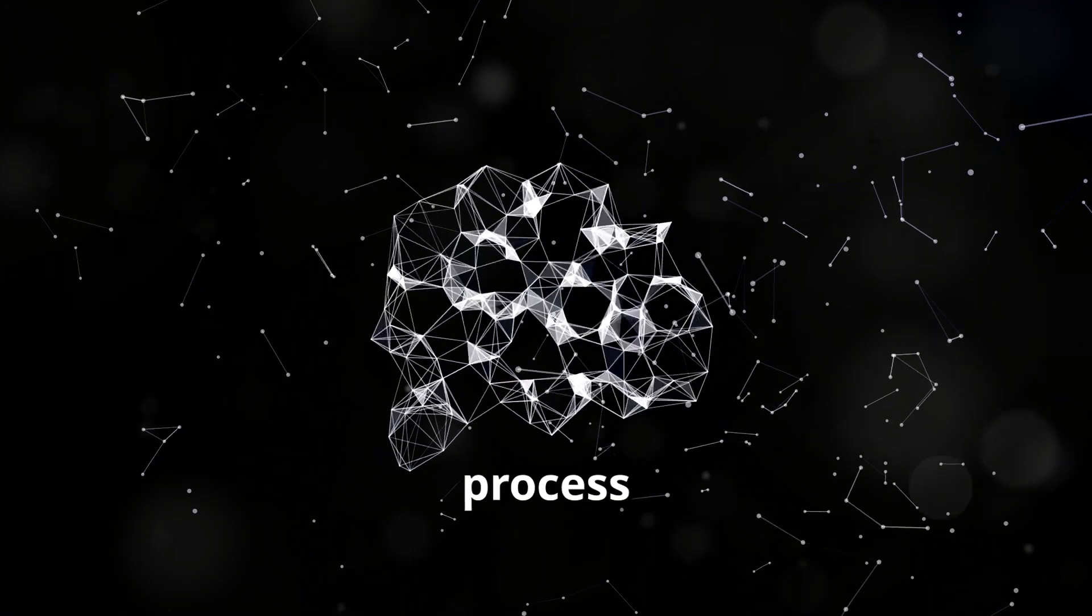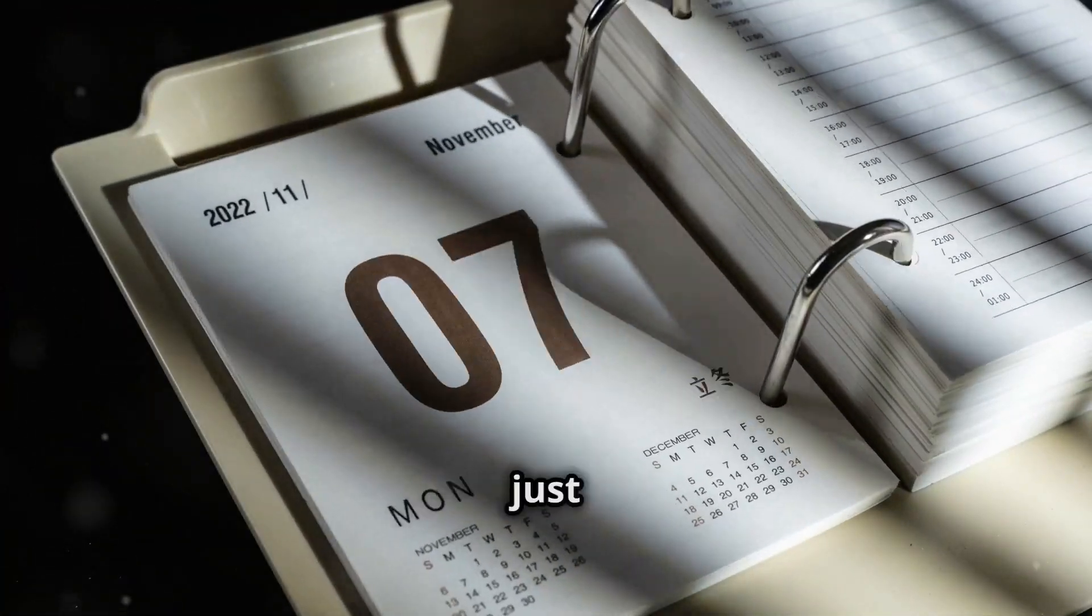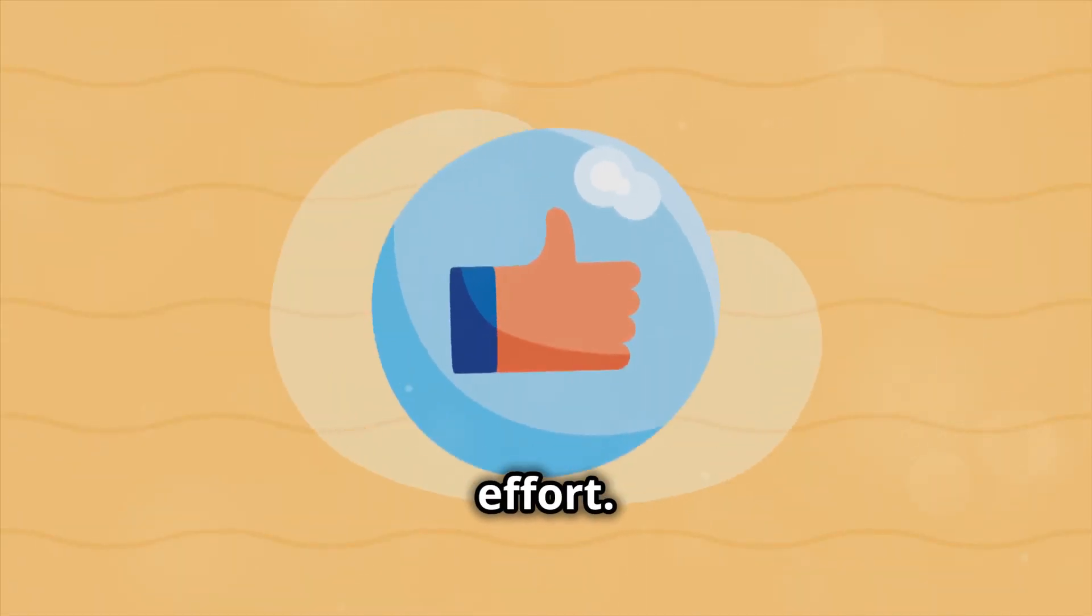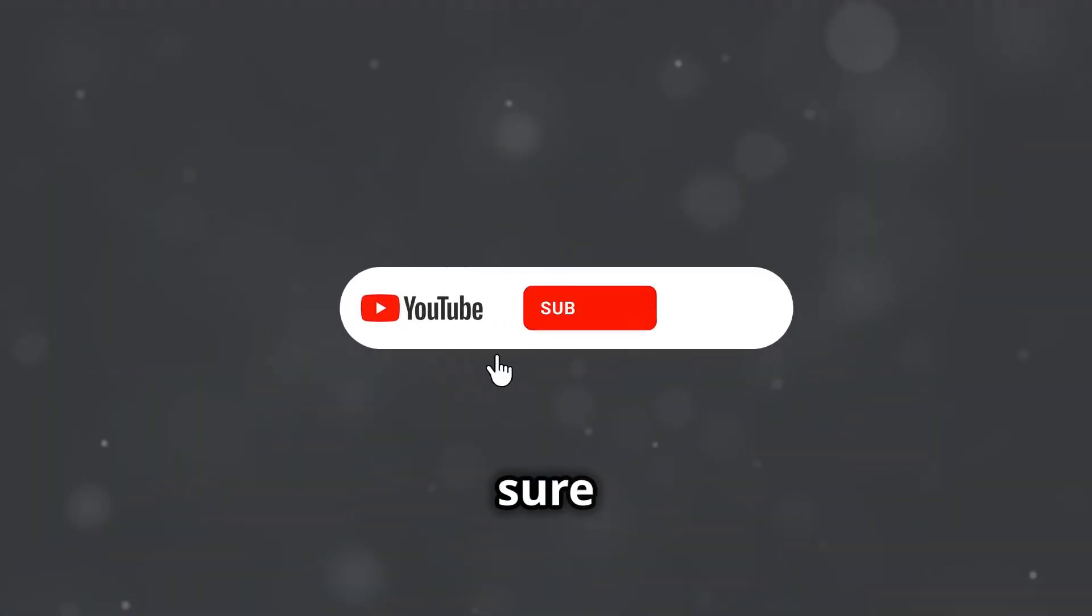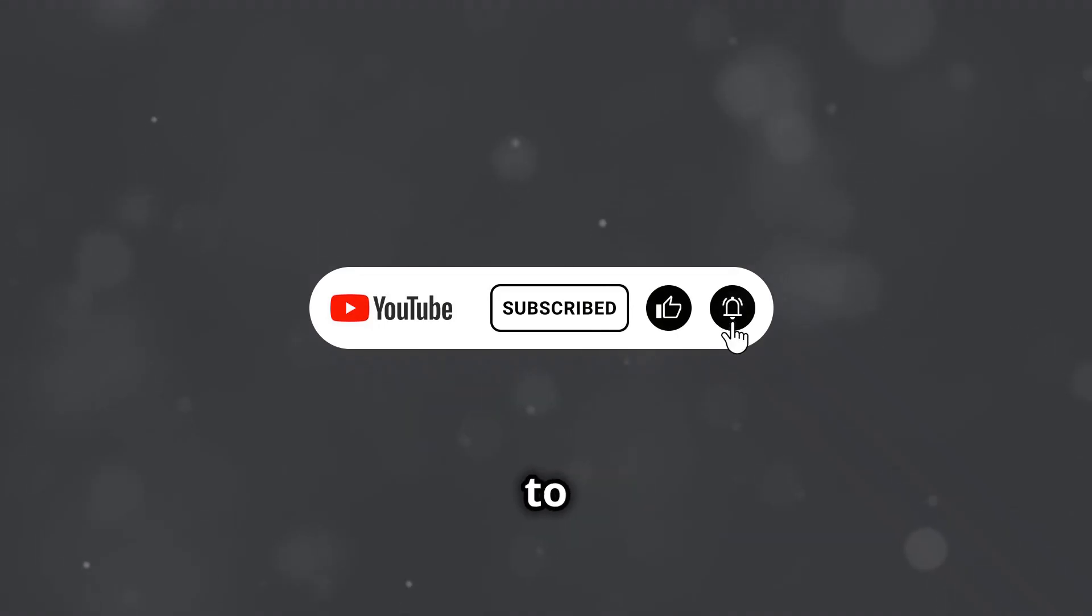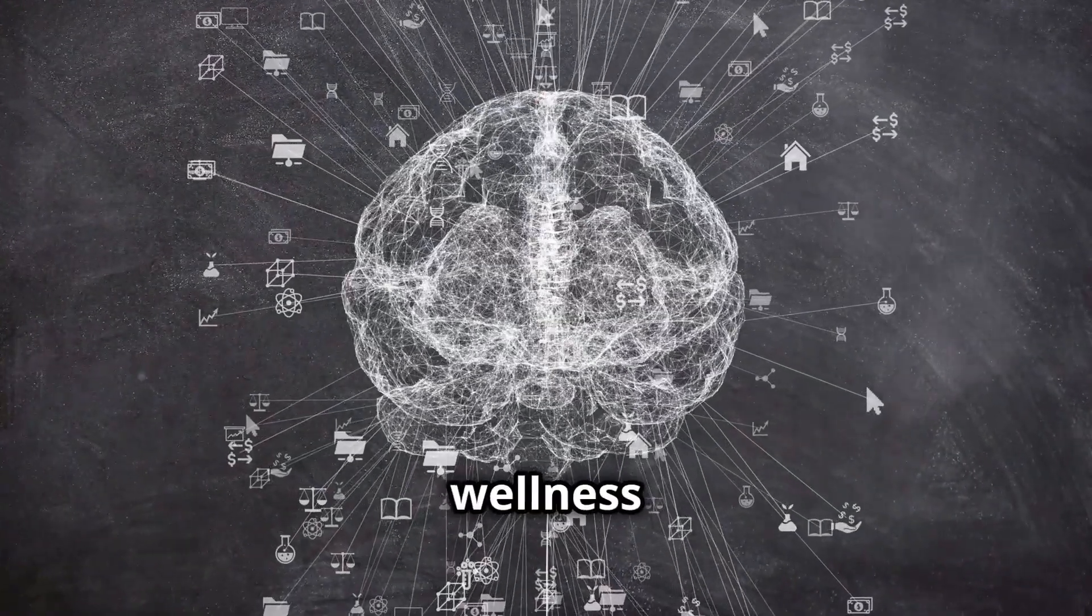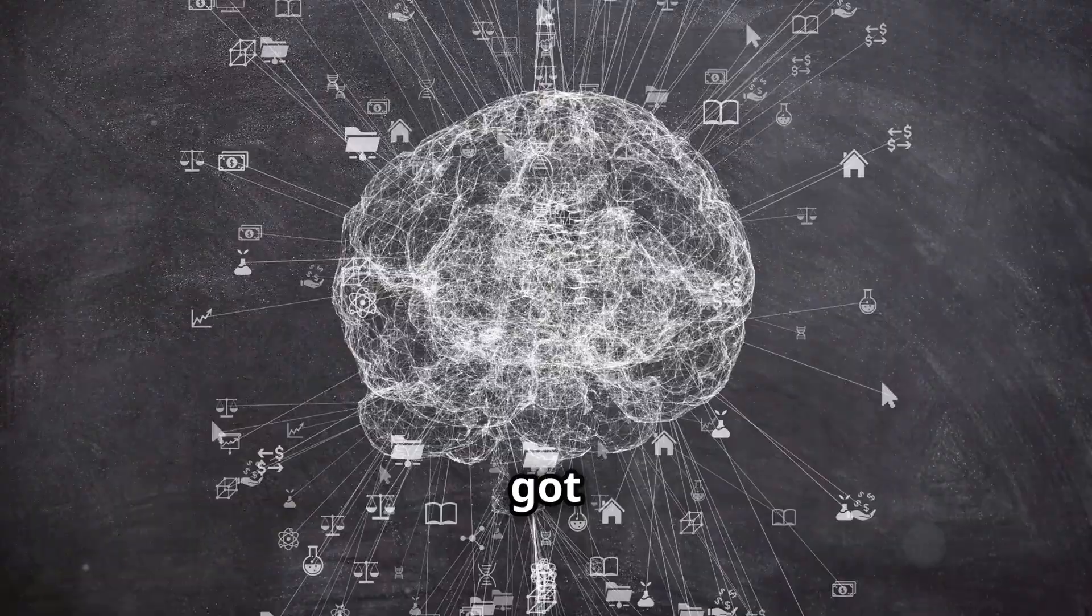Rewiring your brain is a scientific process, and it's something you can achieve in just 90 days with consistent effort. If you've enjoyed the content, be sure to hit the like button and subscribe for more insights on how to optimize your life. From health and wellness to fitness and finance, we've got you covered.